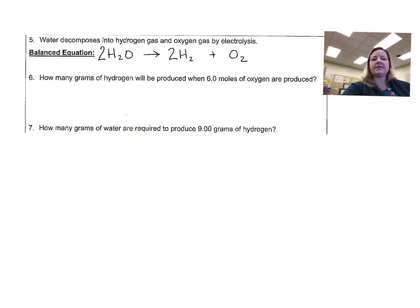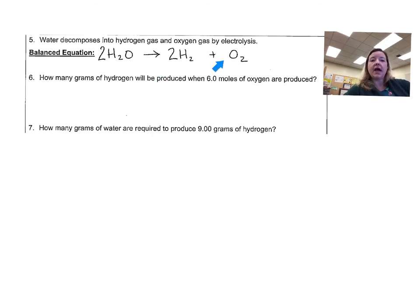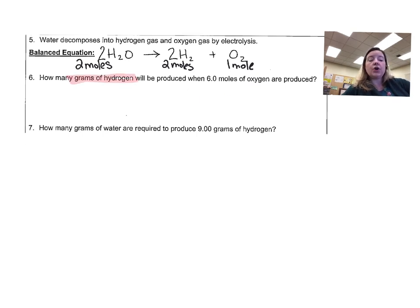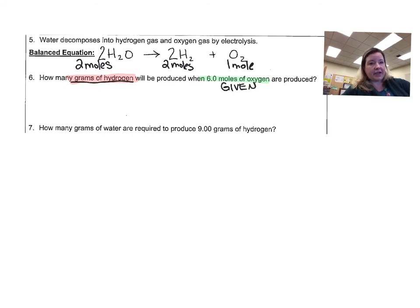Okay, so this problem says water decomposes into hydrogen gas and oxygen gas by electrolysis, and we have our balanced equation already written. The balanced equation tells us that two moles of water break down to produce two moles of hydrogen gas and one mole of oxygen gas. Number six says: how many grams of hydrogen will be produced? That's our unknown — what we want to find is grams of hydrogen. We are told we have six moles of oxygen. The balanced equation tells us we have one mole of oxygen but we are starting with six moles. We want to know how many grams of hydrogen are produced, and the equation tells us two moles of hydrogen.